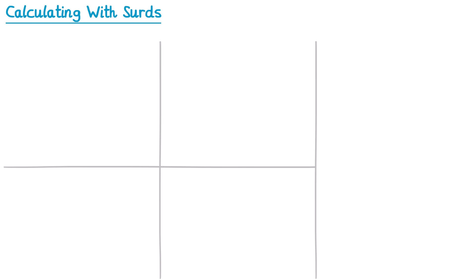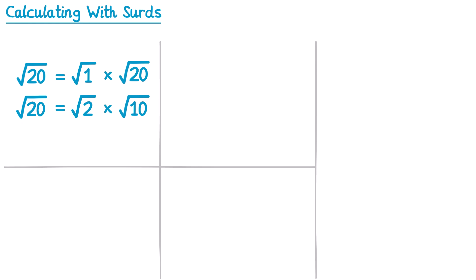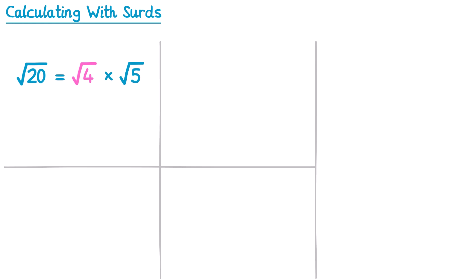Next we're going to look at how you simplify surds. Let's take the square root of 20. Using the multiplication rule we could split this into the square root of 4 times the square root of 5, since 4 and 5 are a factor pair that multiply to make 20. The square root of 4 is not a surd because 4 is a square number — the square root of 4 is 2. So the square root of 20 equals 2 times the square root of 5, which we write as 2 root 5. This is considered more simplified because the number inside the square root is smaller.